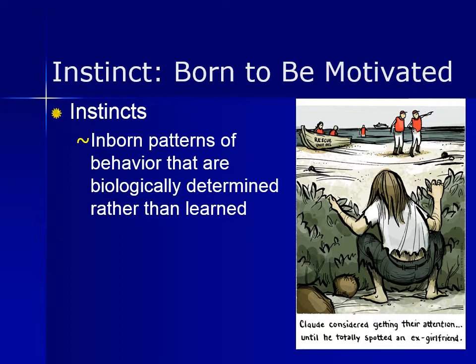Babies have an inborn rooting reflex that helps them seek out a nipple and obtain nourishment. An example in the animal world is seasonal migration and making nests. Humans and animals alike do not learn to do this — it is instead an inborn pattern of behavior.